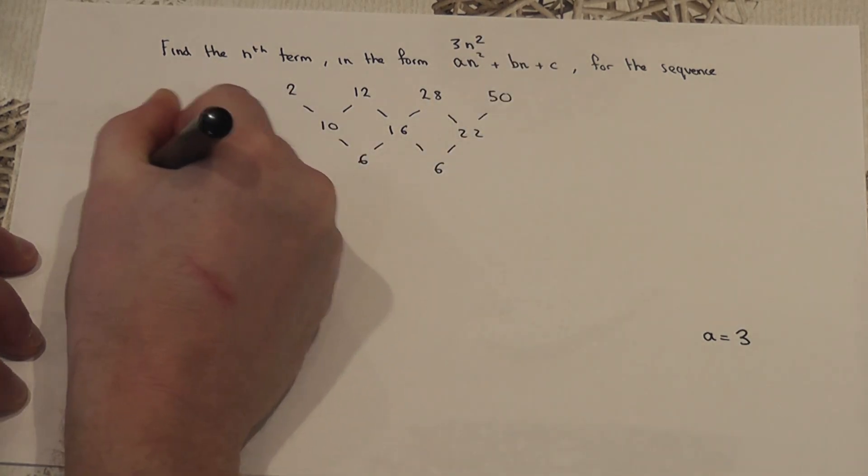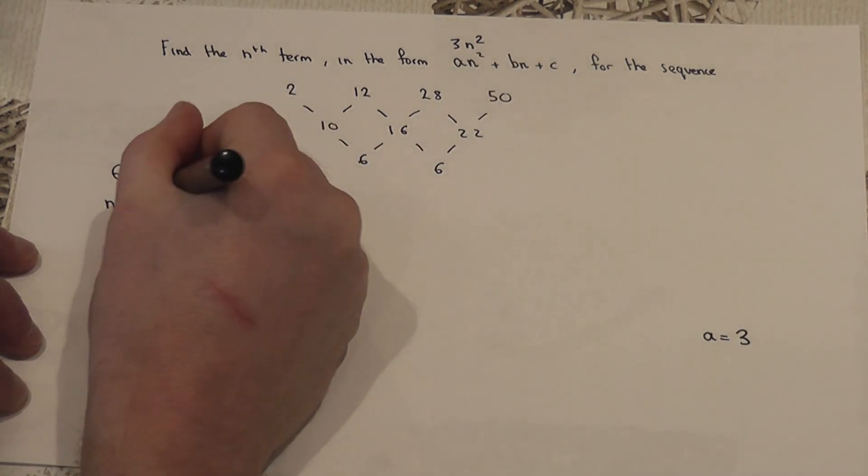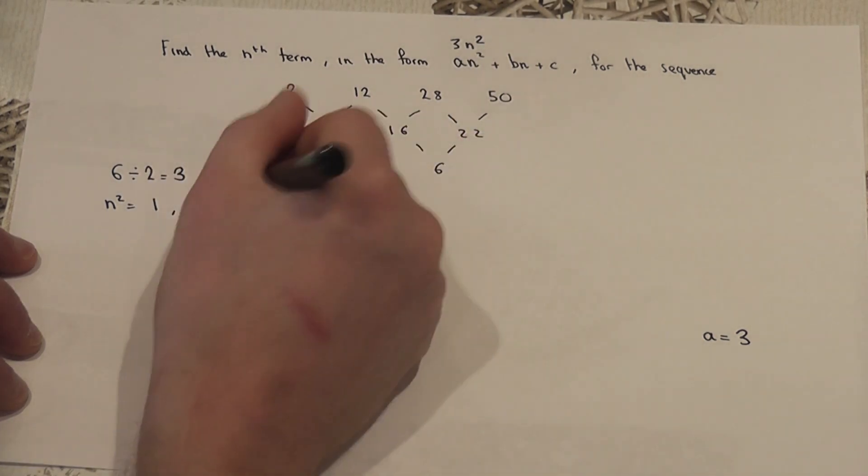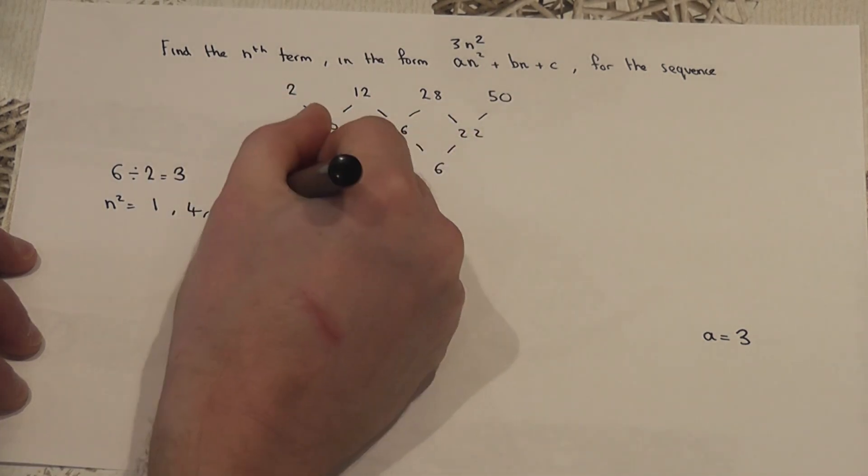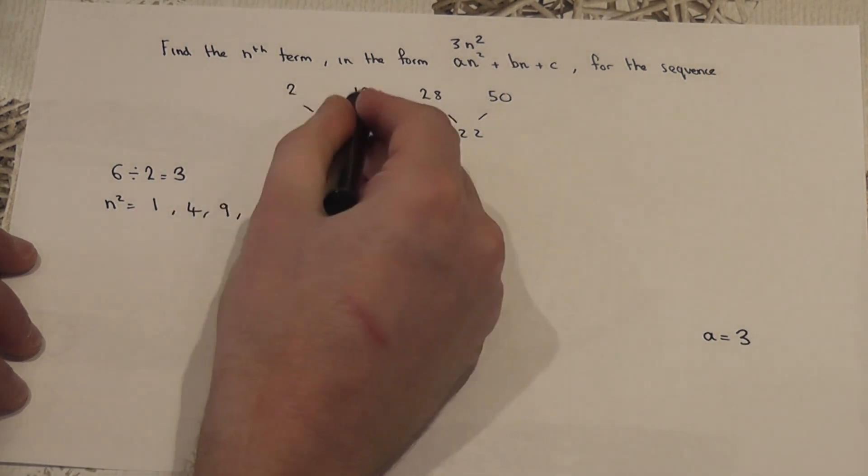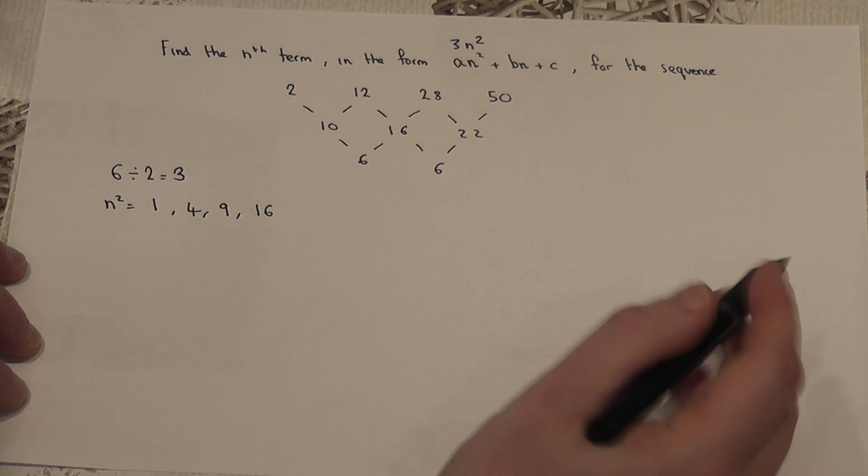Now, we know that n squared is just a sequence. 1 times 1 is 1, 2 times 2 is 4, 3 times 3 is 9, 4 times 4 is 16. I'll do 4 terms, because there were 4 terms in the original sequence.